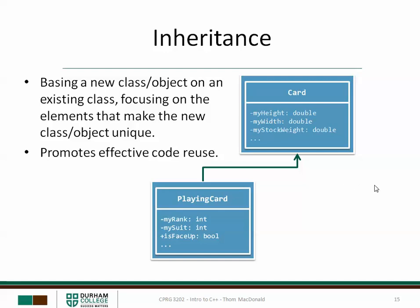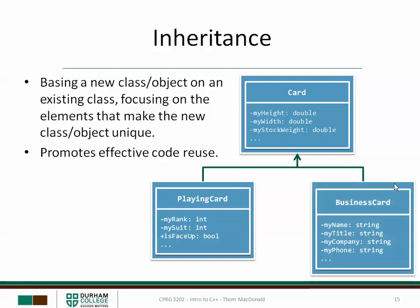Another programmer, or you yourself at another time, might decide to create a completely different type of class — BusinessCard in this particular case — still based on Card. We're not reinventing the wheel by redefining all of those attributes and behaviors. We simply say a BusinessCard is a Card; it has all of those attributes and behaviors, plus these extra ones. So Card is the parent class to both PlayingCard and BusinessCard, which makes PlayingCard and BusinessCard sibling classes.